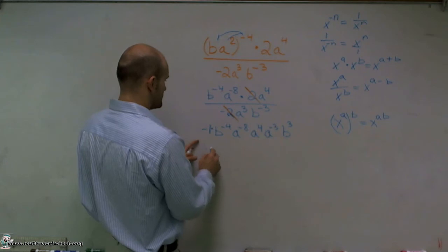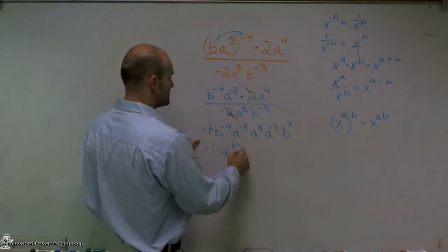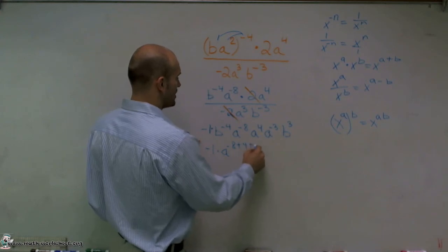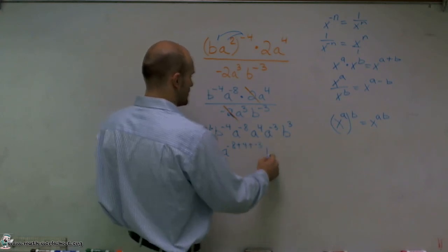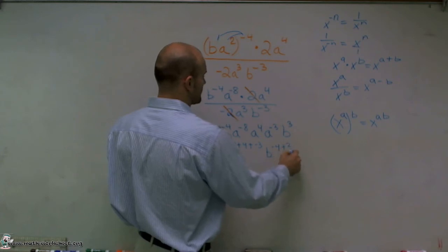So I have negative one times A to the negative eight, plus four, plus negative three, and then B to the negative four, plus three.